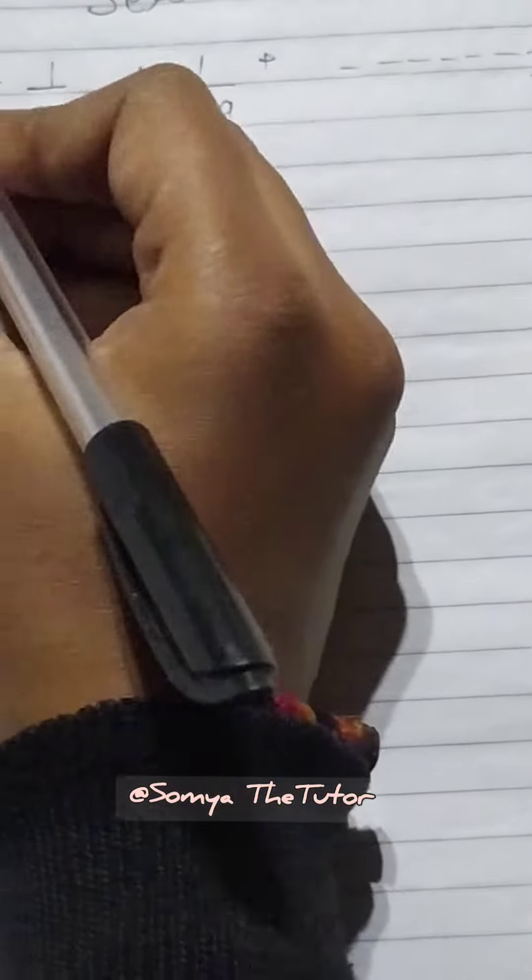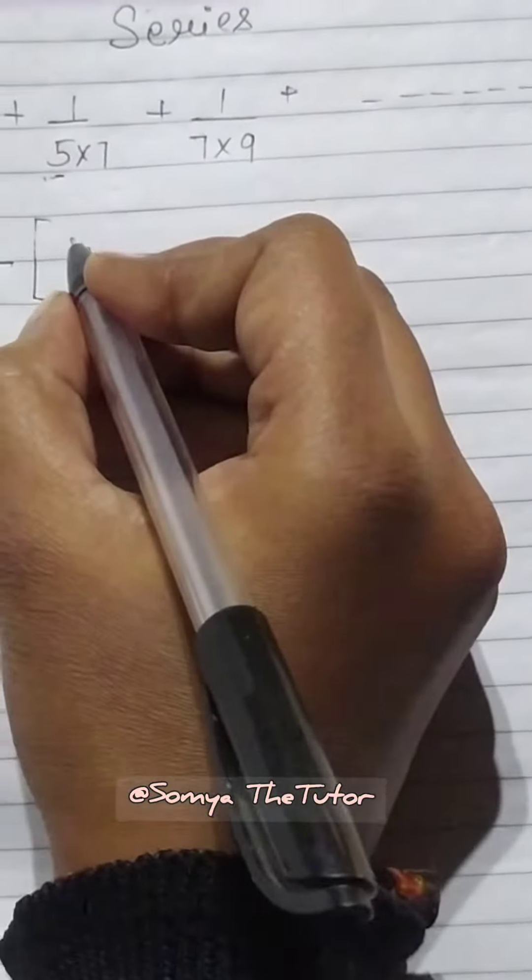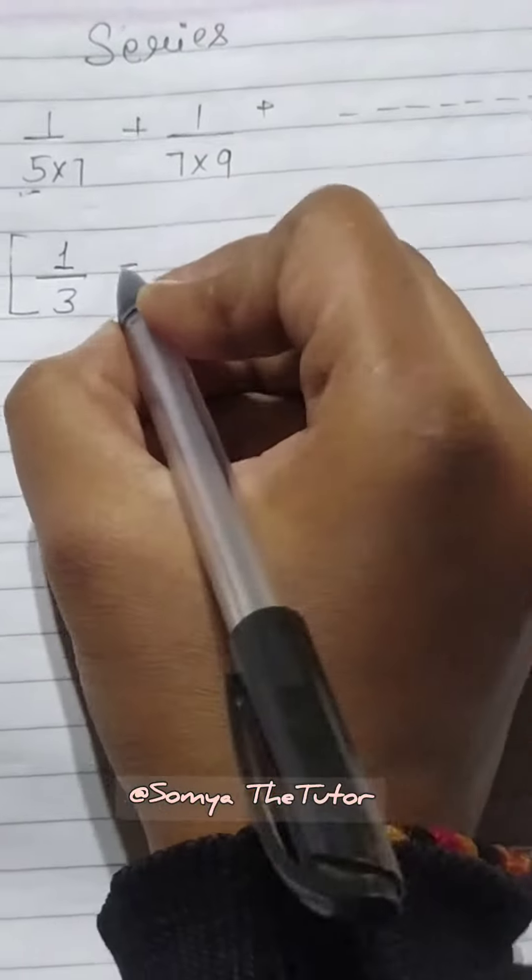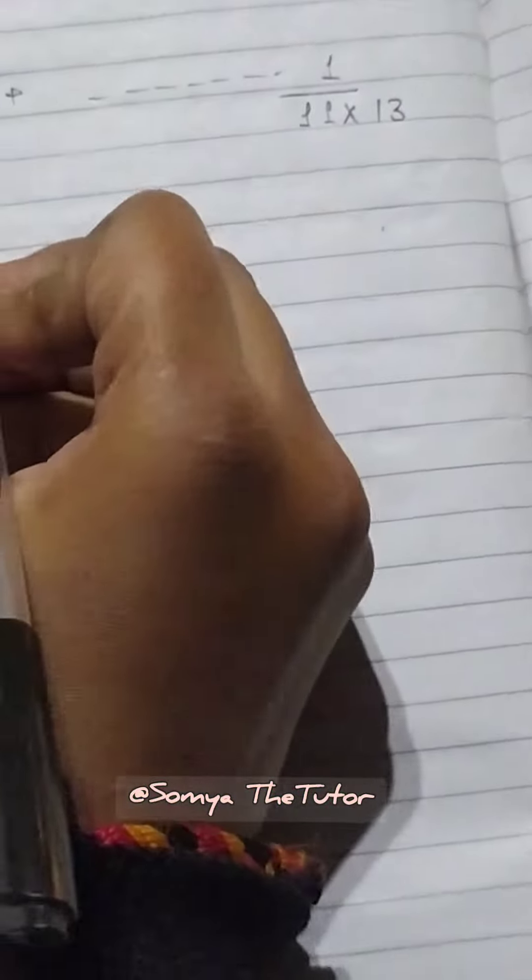If we take the difference of first and second term, first term's first number is 1 upon 3 minus our last term, 1 upon 13.